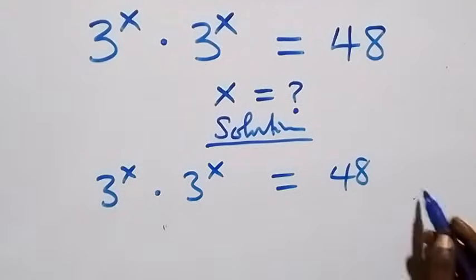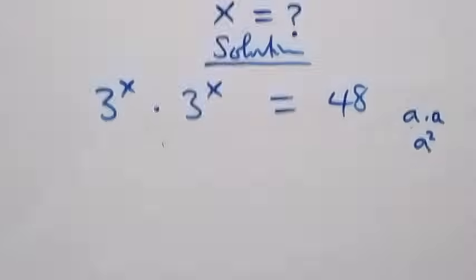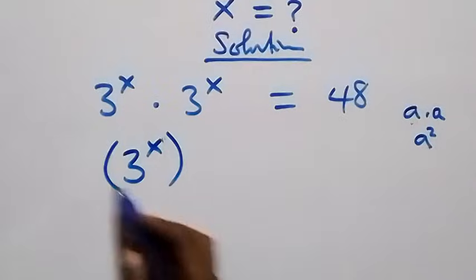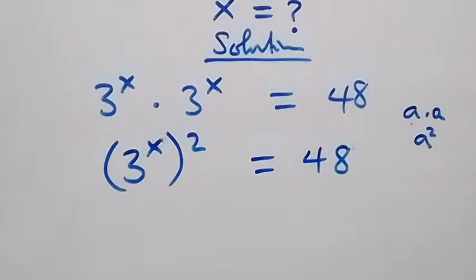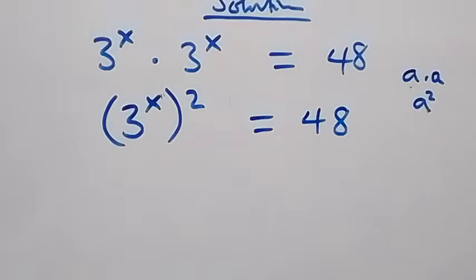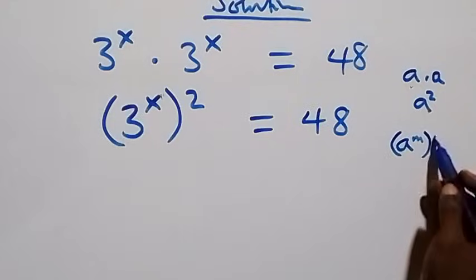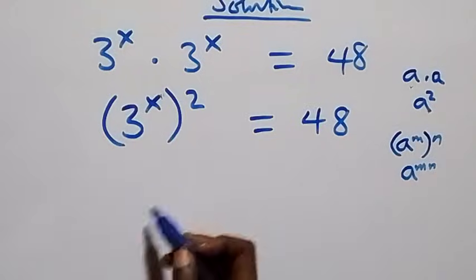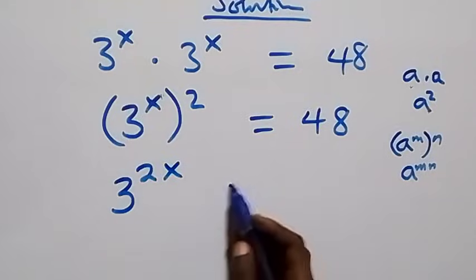This follows from where we have a times a, which is the same thing as a squared. So we can write this as 3 raised to power x, all squared, equals 48. Then following the law of indices — a raised to power m, raised to power n, becomes a raised to power mn — the power multiplies, giving us 3 raised to power 2x equals 48.